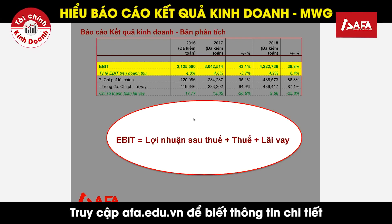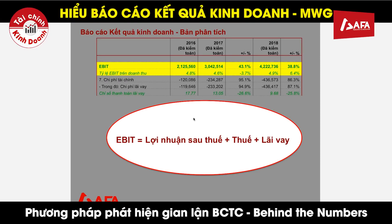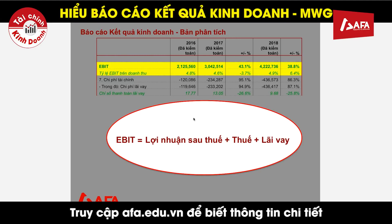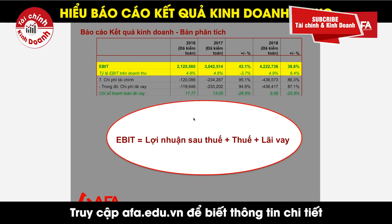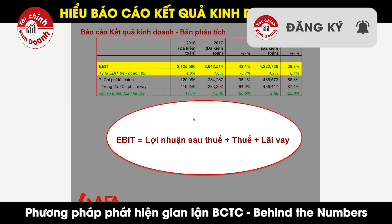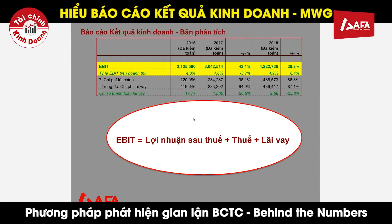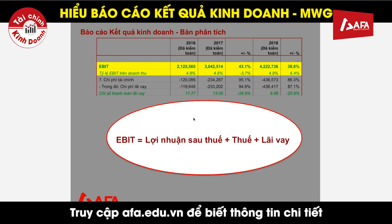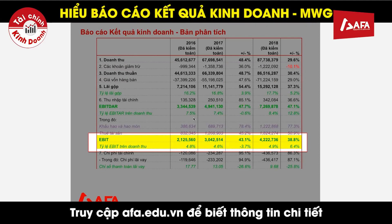Chỉ tiêu tiếp theo là EBIT - lợi nhuận trước lãi vay và thuế, được tính bằng lợi nhuận sau thuế cộng thuế cộng lãi vay. Chỉ tiêu này đóng vai trò quan trọng vì nó loại bỏ ảnh hưởng của cấu trúc vốn cũng như ảnh hưởng của thuế. Năm 2016 và 2017 EBIT cho kết quả tương đối tốt, nhưng 2017 giảm nhẹ do hoạt động kinh doanh không tốt. Đến 2018, EBIT trên doanh thu tăng lên 4,9%, tăng 6,4% so với năm trước. EBIT cũng phản ánh hiệu quả của việc sử dụng đòn bẩy tài chính.